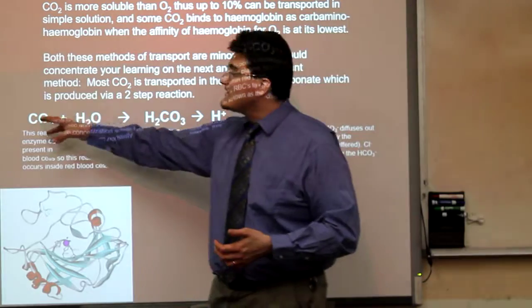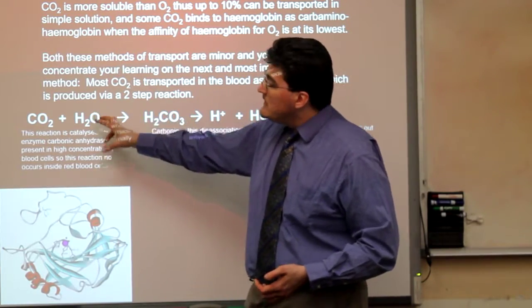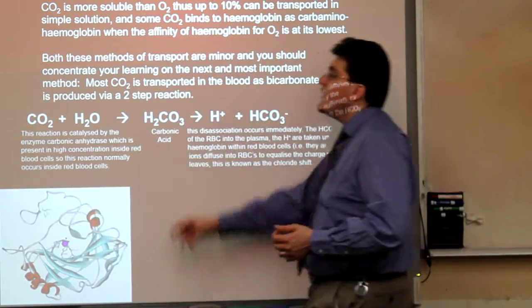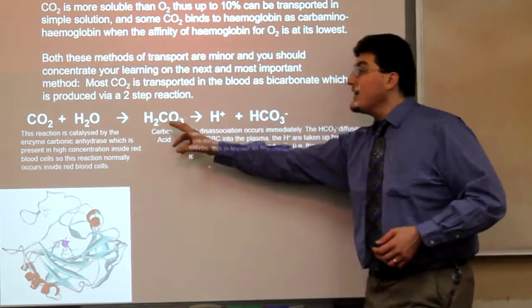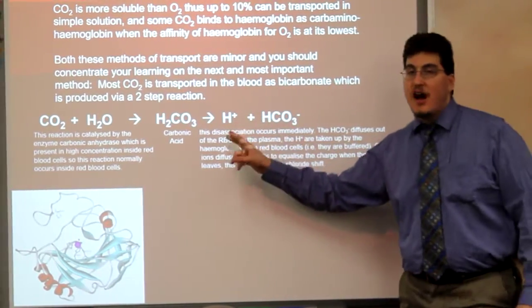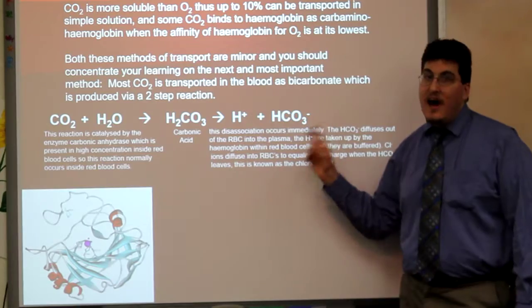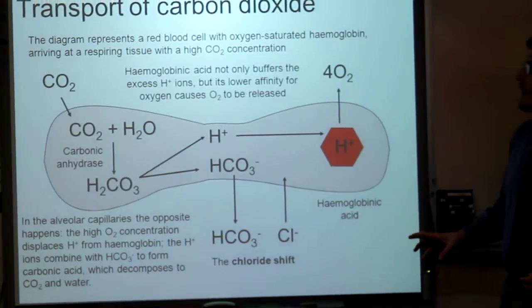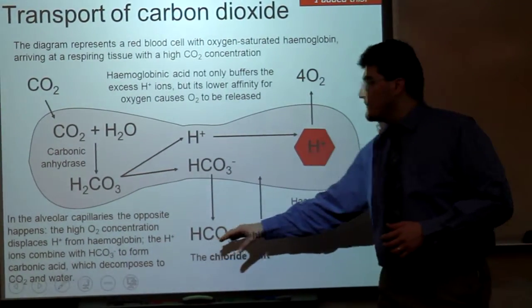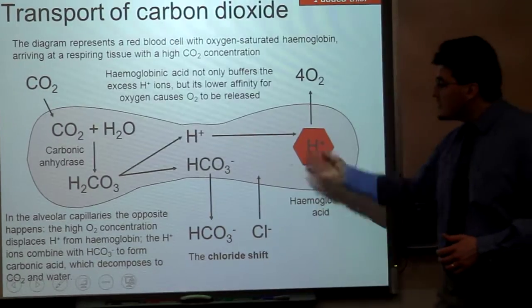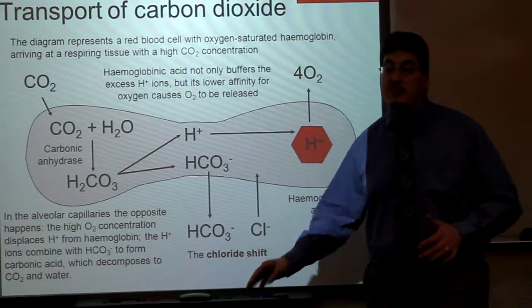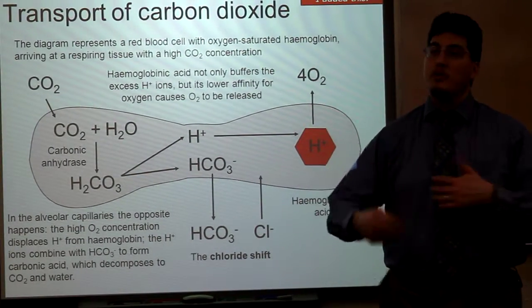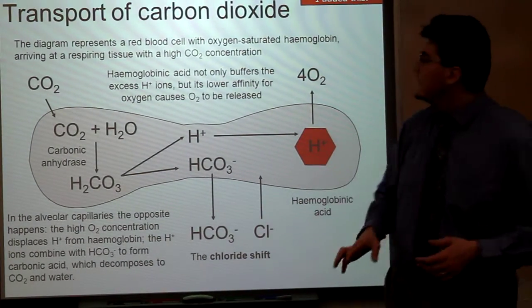Carbon dioxide and water, the reaction between these two is catalyzed by carbonic anhydrase, which is this pretty little molecule right here, into carbonic acid. Carbonic acid dissociates into hydrogen ions and bicarbonate ions. These bicarbonate ions are going to be shifted out of the red blood cell in exchange for chloride ions. This is called the chloride shift, and that's really all you need to know for Cambridge purposes.